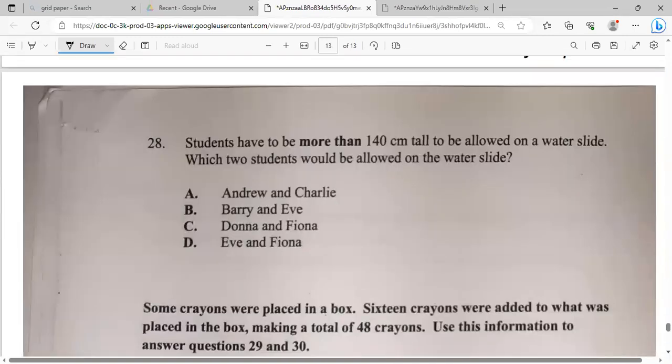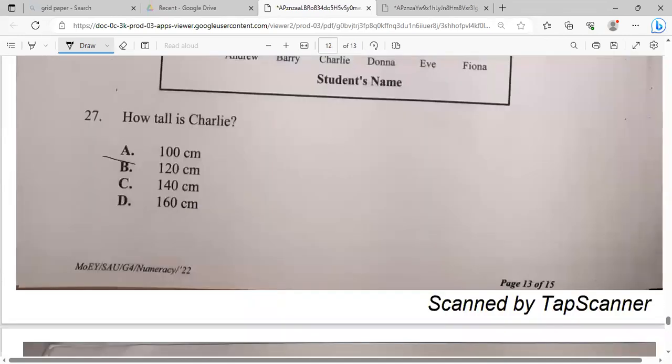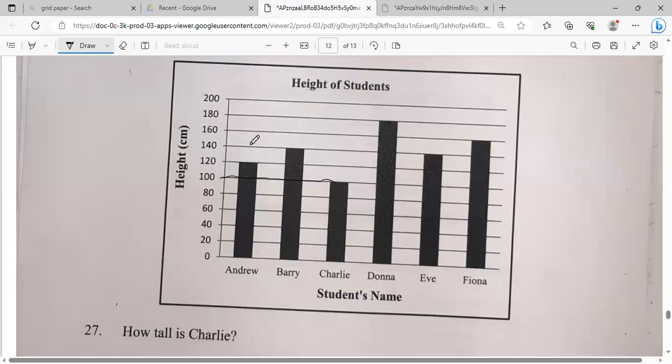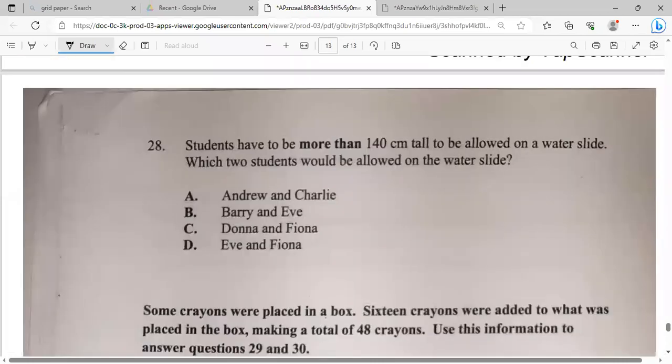Students have to be more than 140 centimeter tall to be allowed on a water slide. Which two students would be allowed on the water slide? So we have Andrew, Charlie, Barry. Let's go back up to the chart. So 140, so this is the bar. Now, Eve, she eat the apple. We couldn't use Eve because she's exactly. She said more than. So we have to use Fiona and Donna. Since they passed the 140. So you could use the water slide. And guys, be careful for this summer. So it's Donna and Fiona.